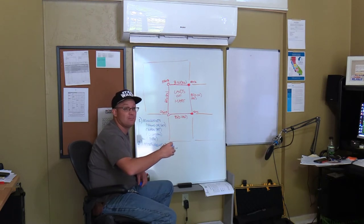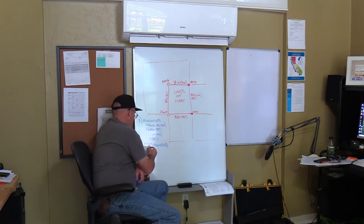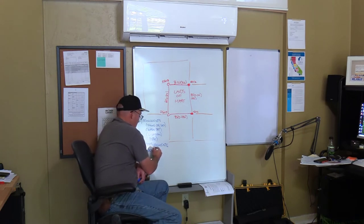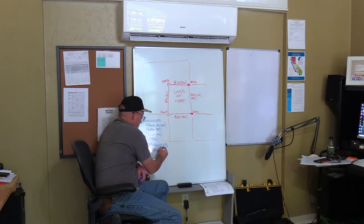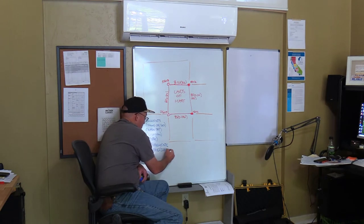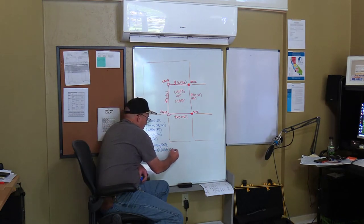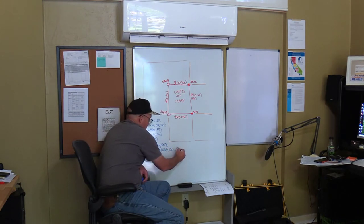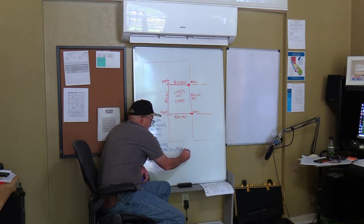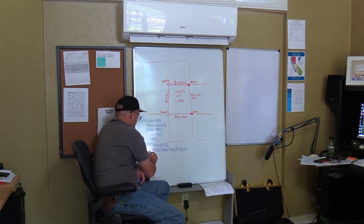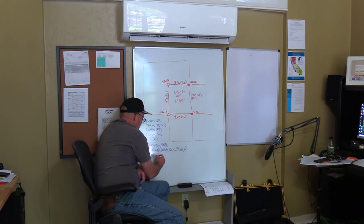Area, right? So we've got bearing — and in parentheses, direction or angle, because two bearings give us the angle — we have distance, and we have area. Excellent. Good job, guys.